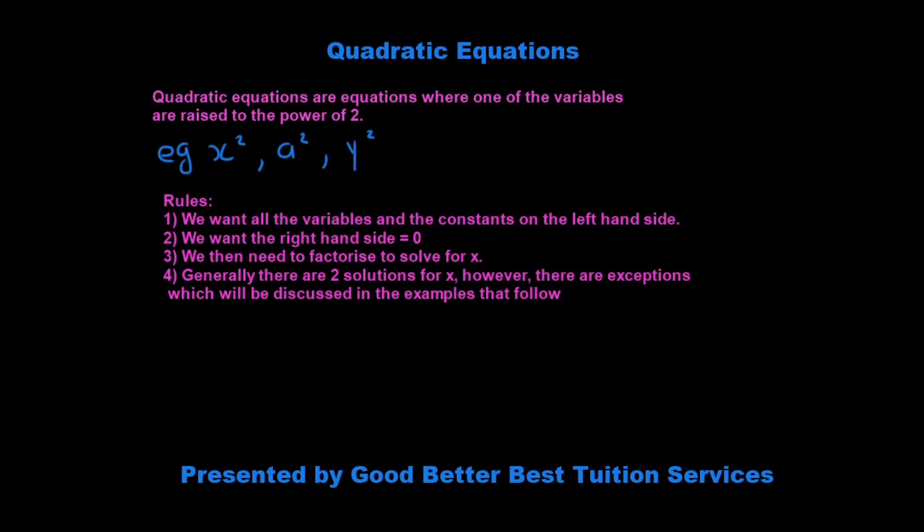And there are certain rules that we want to look at. The first rule is that we want all the variables and the constants on the left-hand side, and we want the right-hand side equal to 0. What we generally need to do then is to factorize to solve for x. Now, because it's been raised to the power of 2, generally there will be two solutions for x. However, there are exceptions, which we will discuss in the examples that follow.